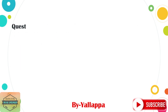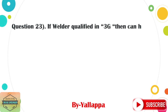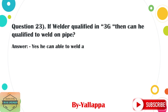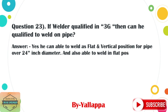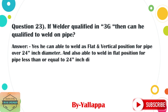Question 23: If a welder is qualified in 3G, can he qualify to weld on pipe? Answer: Yes. He is able to weld in flat and vertical positions for pipe over 24 inches diameter, and also in flat position for pipe less than or equal to 24 inches diameter.